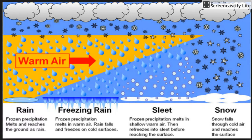And that's why sleet is always kind of mistaken for hail, because they do look similar, but they form completely differently. Hail forms in a thunderstorm and up in a cloud, so keep those two things in mind: sleet and hail are not the same thing.